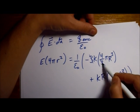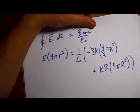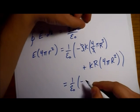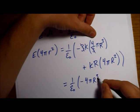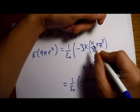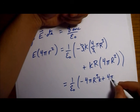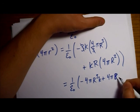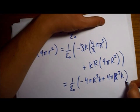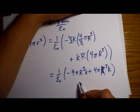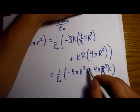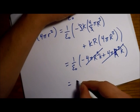Let's work these out. This 3 will divide with this 3. What we have left over is minus 4πR³K, and this piece gives us plus 4πR³K. The punchline is that these are the same, 4πR³K minus 4πR³K, and they subtract out to 0.